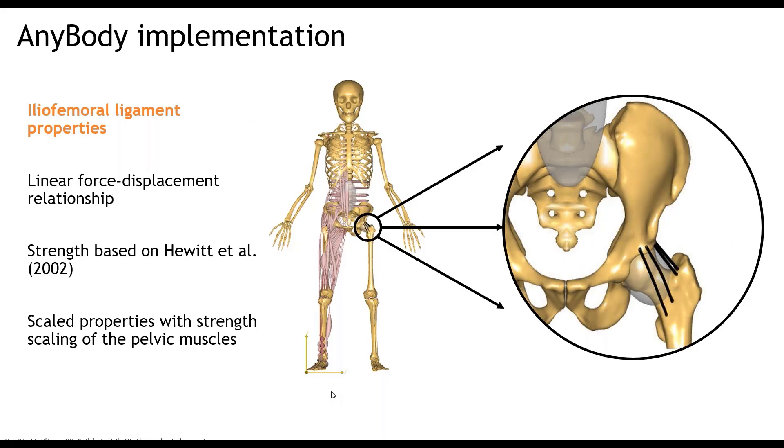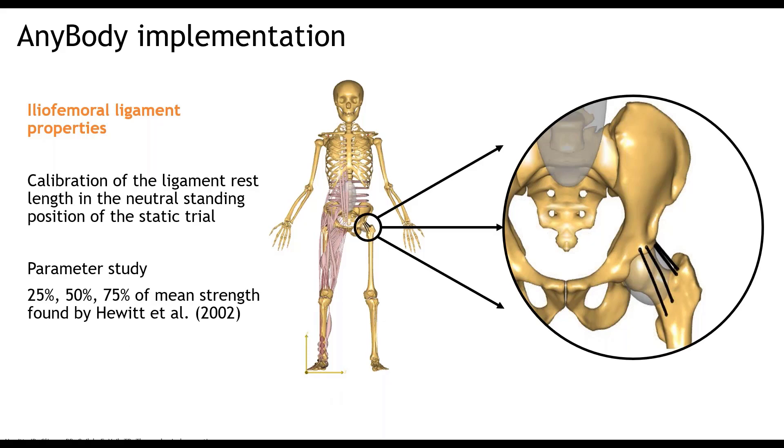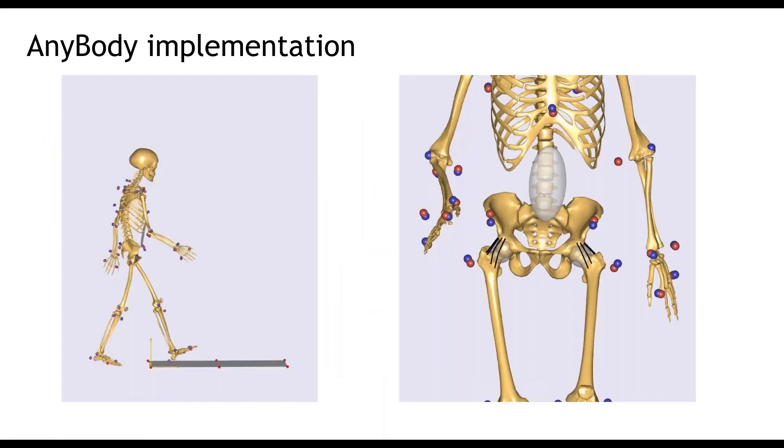Then, of course, we also needed to define the mechanical properties. We implemented a linear force displacement relationship with properties based on what Hewitt and his colleagues reported in 2002. We scaled these strengths together with the strength scaling of the pelvic muscles. To obtain accurate forces in the ligament, we also needed to calibrate the ligaments. We opted to calibrate the ligament's rest length using the neutral standing position of the static trials of the subjects. In literature, there is a large uncertainty on the mechanical properties of the iliofemoral ligament. Therefore, we also included a parameter study in which we decreased the strength of the ligaments to 25, 50 and 75 percentage of the mean strength found by Hewitt and his colleagues.